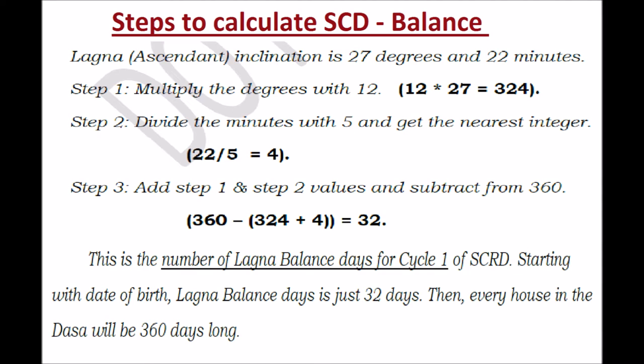The third step is: add step 1 and step 2 and then subtract from 360 degrees. So 360 minus 328 equals 32. This is the number of Lagna balance days for cycle number 1. That means at the time of birth, for the first house, 32 days are remaining.